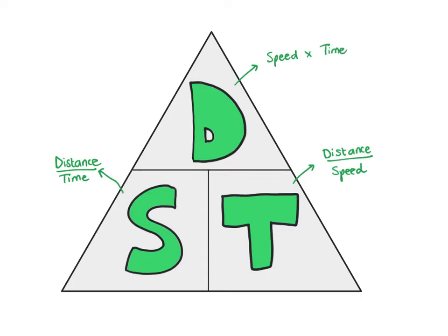I like using this triangle to remind me about the relationships. So if I'm looking for speed, I cover up the S and I can see that what's left over is distance and time and it makes a fraction. Or if I'm looking for time and I cover up the T, I can see that I'm going to divide distance by speed. And if I want to find distance, that's going to be speed times time.